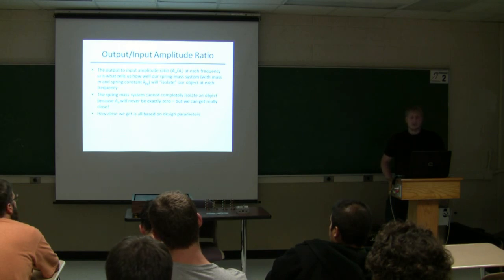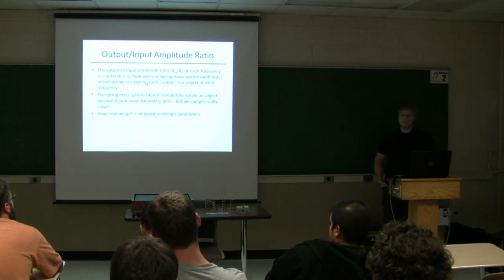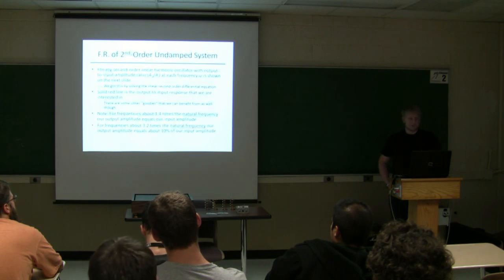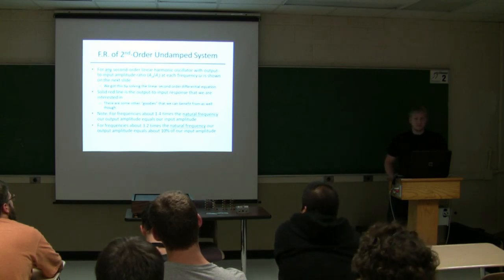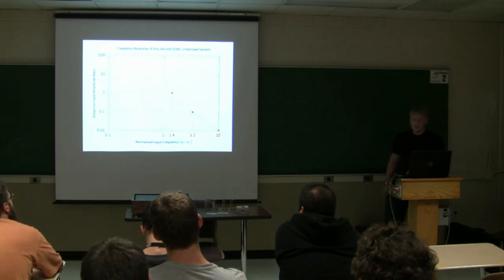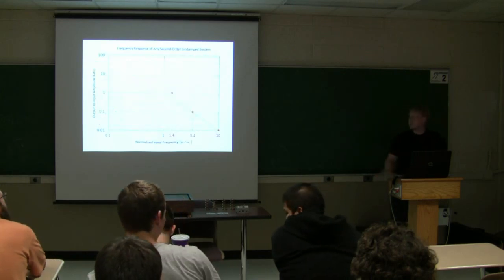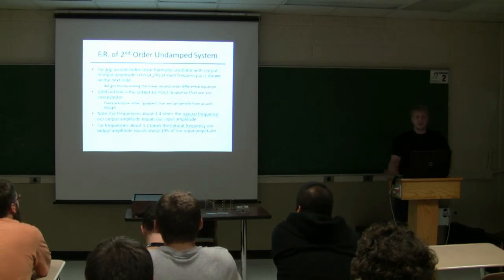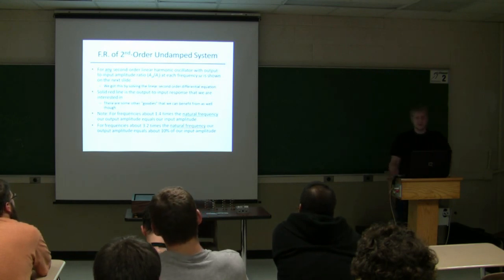And so, the spring mass system, you can't really completely, 100% isolate if you're sitting on top because, A sub-O, the output amplitude will never be exactly zero. But, we can get really close, I mean, 0.001%, which is basically nothing. So, really how close we get to zero is based on our design parameters. So, for any second order linear harmonic oscillator with an output to input ratio, the output to input amplitude ratio at any frequency is just this. That's all it is. Yeah, that's all it is. But, we get this by solving the differential equation, which I'm not going to go over because you either learned it or you don't care about it. So, yeah.